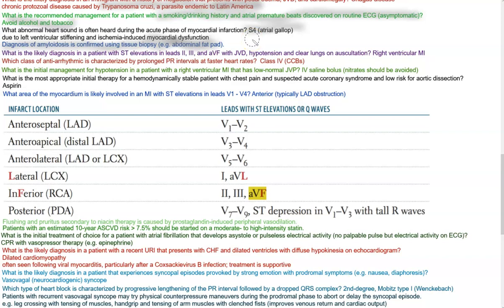What is the likely diagnosis in a patient with ST segment elevations in leads 2, 3, and AVF with JVD, hypotension, and clear lung fields on auscultation? That would be a right ventricular MI. The key here is the clear lungs on auscultation — because the right side is affected, fluid does not back up into the lungs, so you'll hear clear lungs on auscultation.